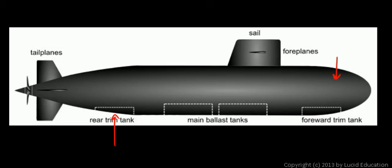So they can control what they call the trim — its angle up and down as it moves through the water. They control that not just with the rudders back here, and what you see is called the tailplanes, they can control it that way, but also with the trim tanks, by controlling the buoyancy in different parts of the submarine.